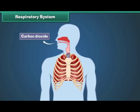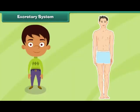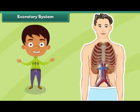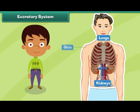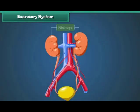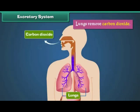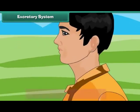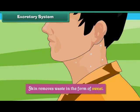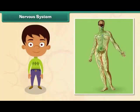The oxygen mixes with food to give us energy. Excretory system: The human excretory system is made up of lungs, kidneys, and skin. It removes wastes from the human body. Kidneys purify blood and remove excess water from the human body in the form of urine. Lungs remove carbon dioxide, and skin removes waste in the form of sweat.